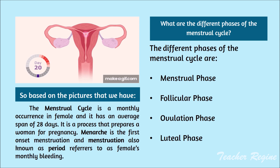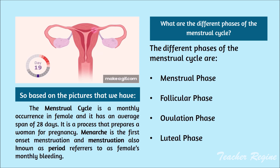What are the different phases of the menstrual cycle? The different phases are: the menstrual phase, the follicular phase, the ovulation phase, and the luteal phase.